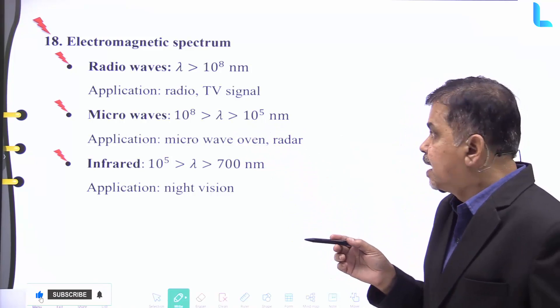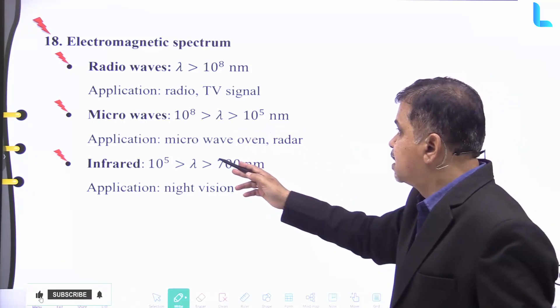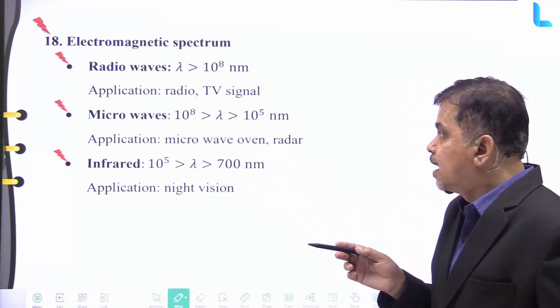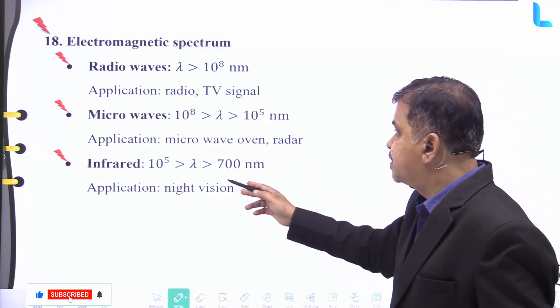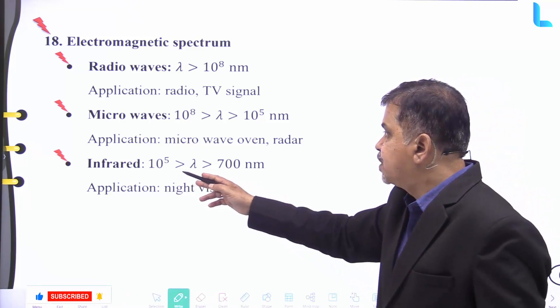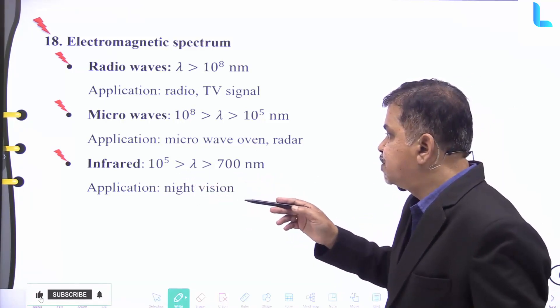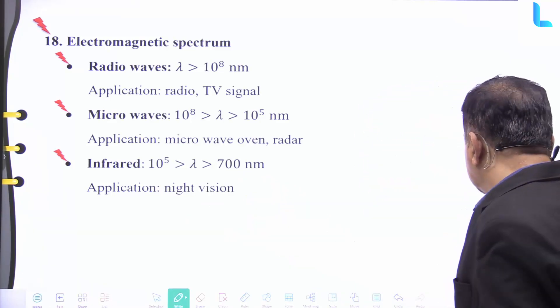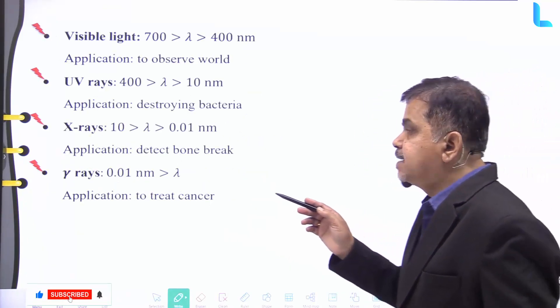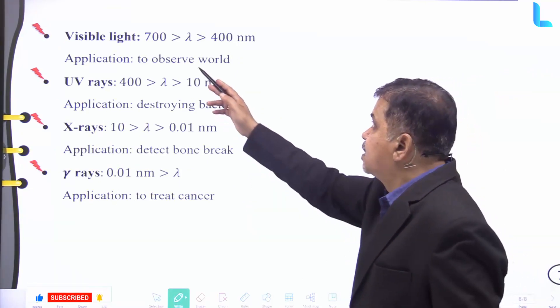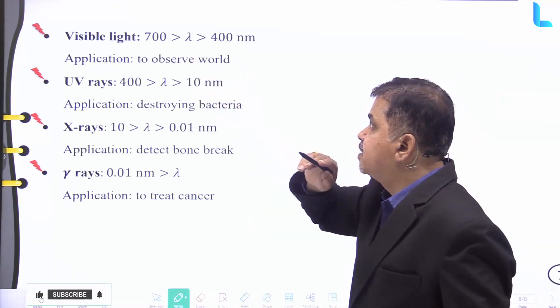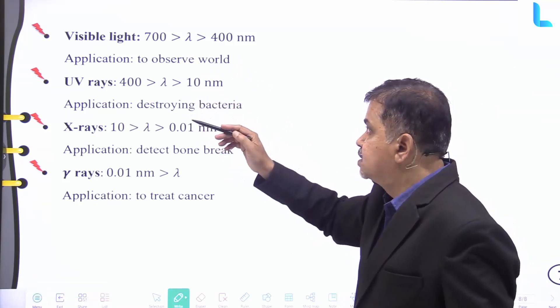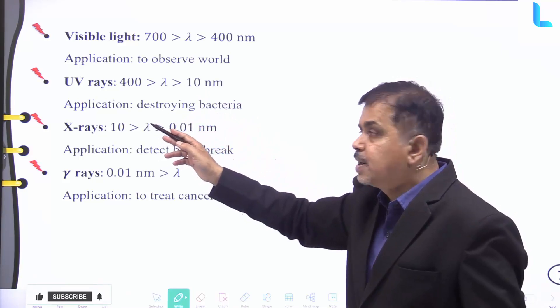For infrared waves, the spectrum ranges between 10⁵ and 700 nanometers, and its application lies in night vision. And for visible light, the range is from 700 to 400 nanometers, and its application is to observe the world.